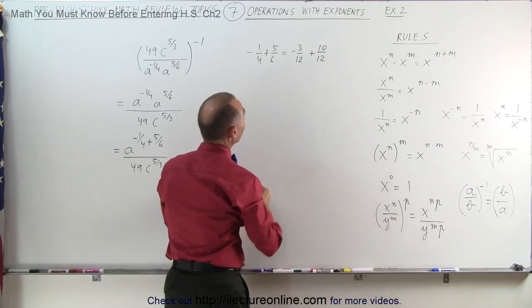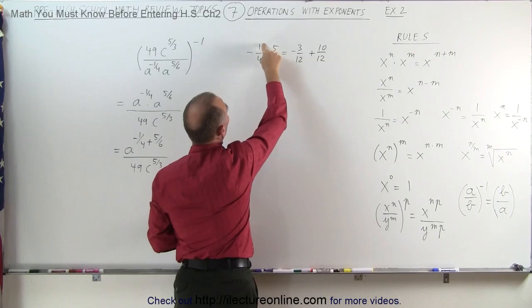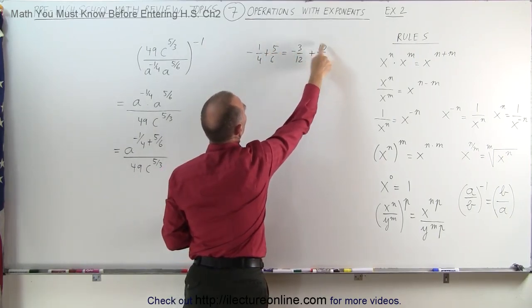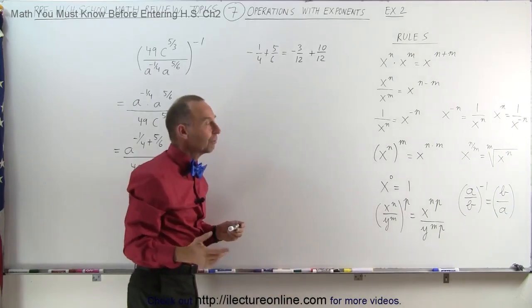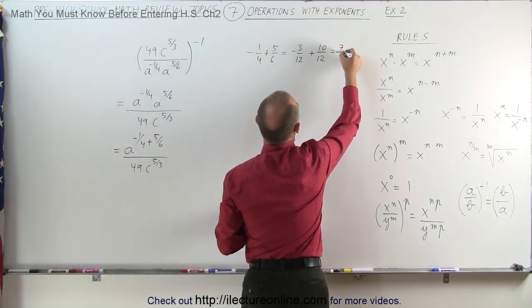Notice when I divide the denominator by 3 I get 4, divide the numerator by 3 I get 1. Divide the denominator by 2 I get 6, divide the numerator by 2 I get 5. So that's the equivalent. Now I can add those together. This is equal to 7 divided by 12.